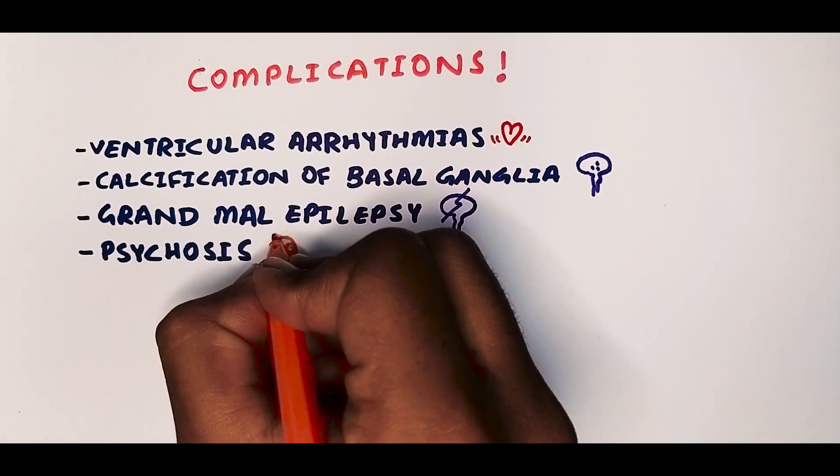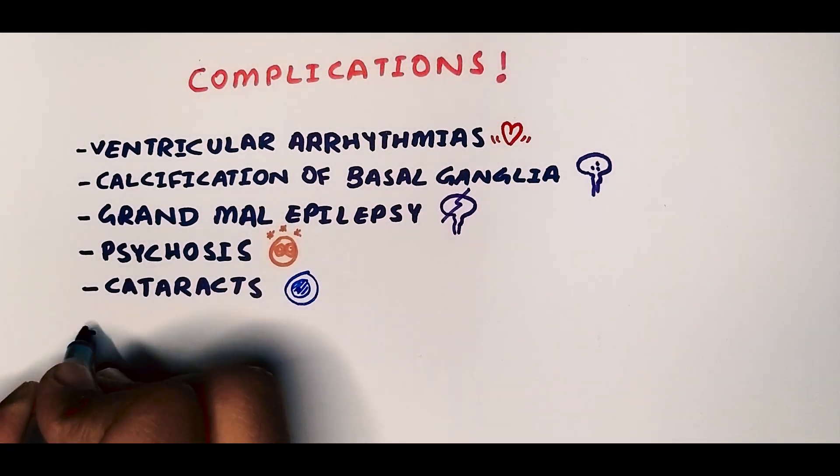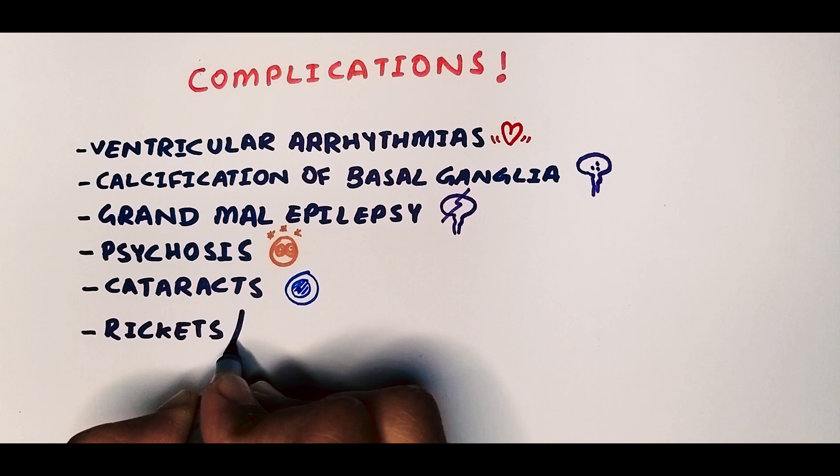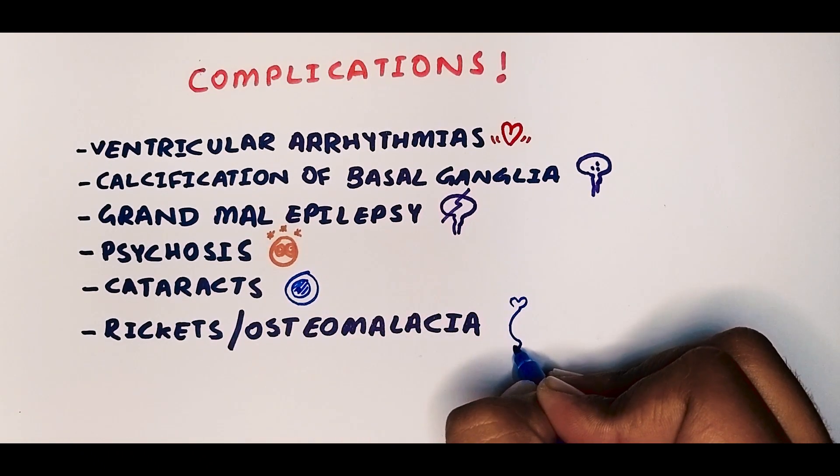The patient may present with psychosis. There may be eye symptoms like cataracts. And due to the resorption from the bone, the patient may have rickets, which is weakening of the bones in kids, or the adult variant, osteomalacia.